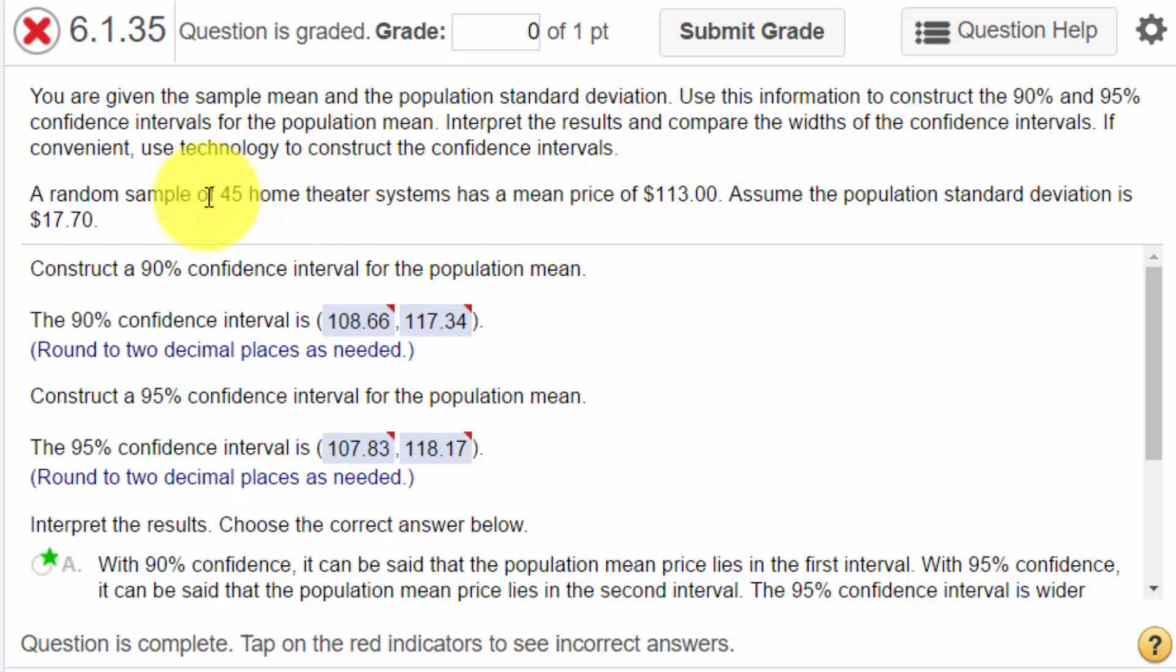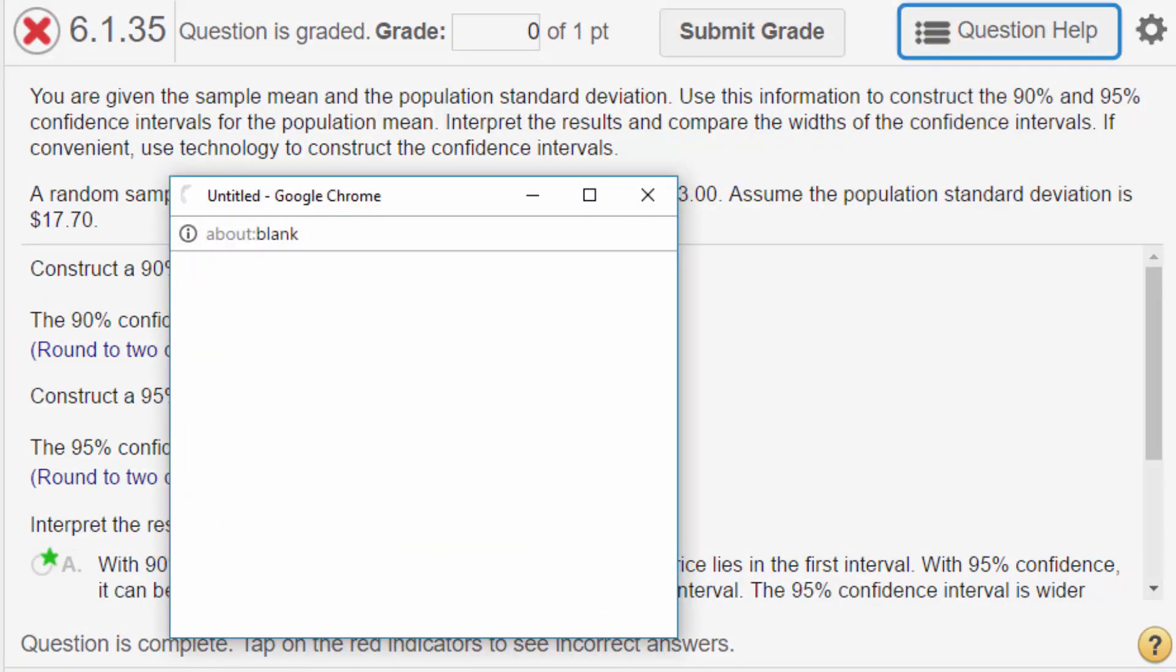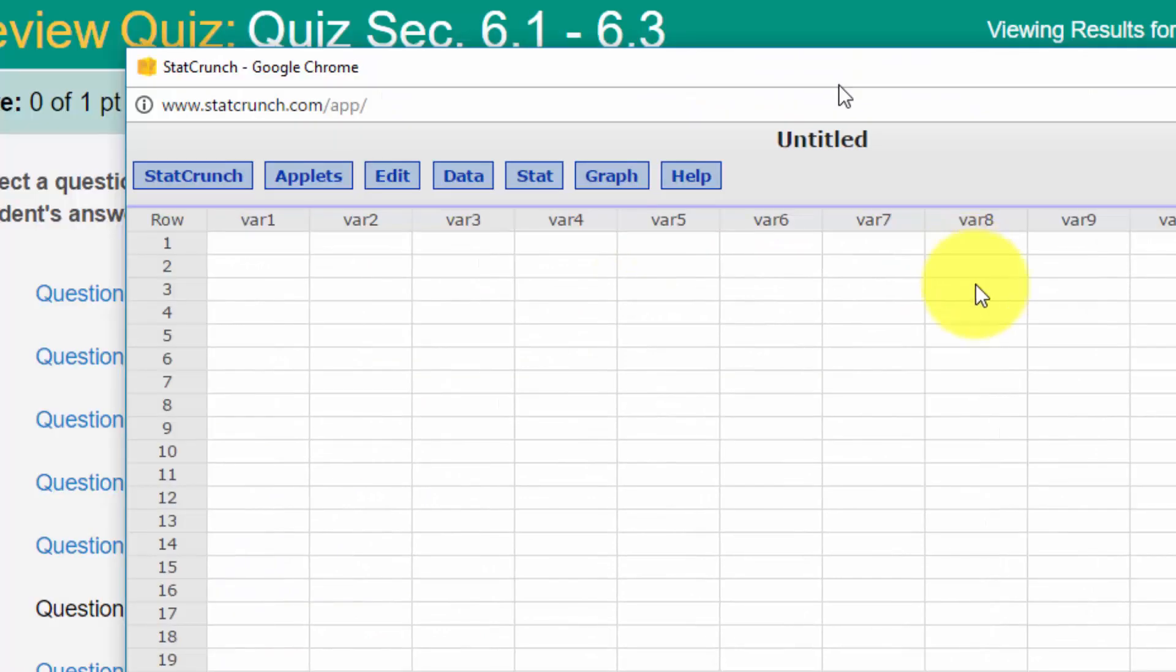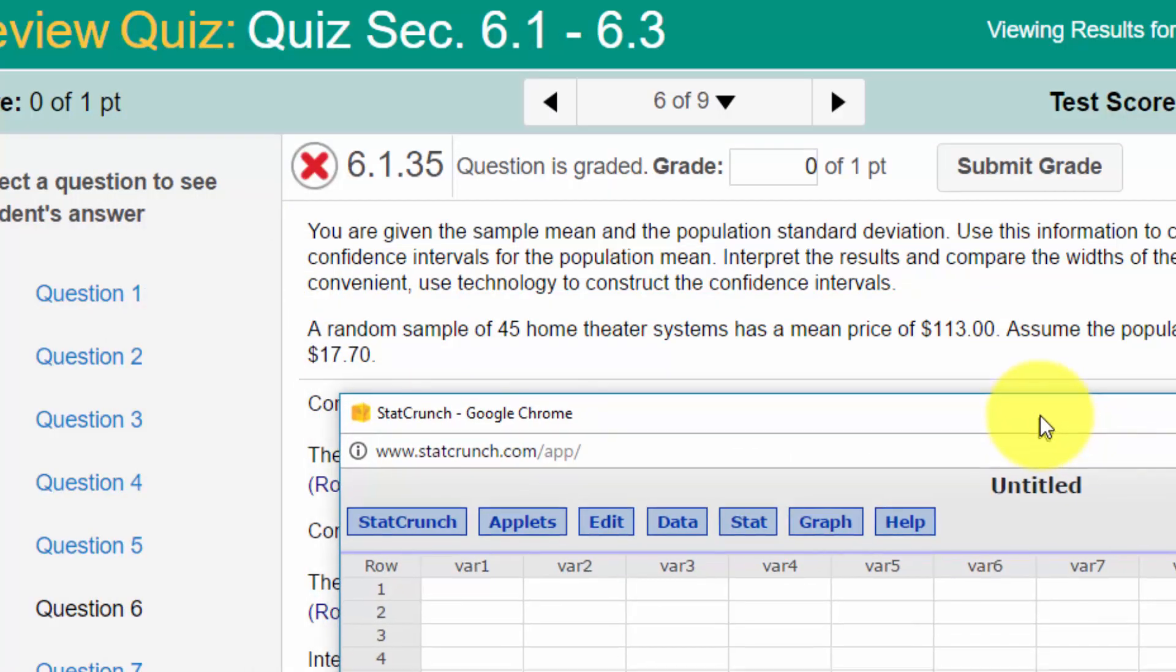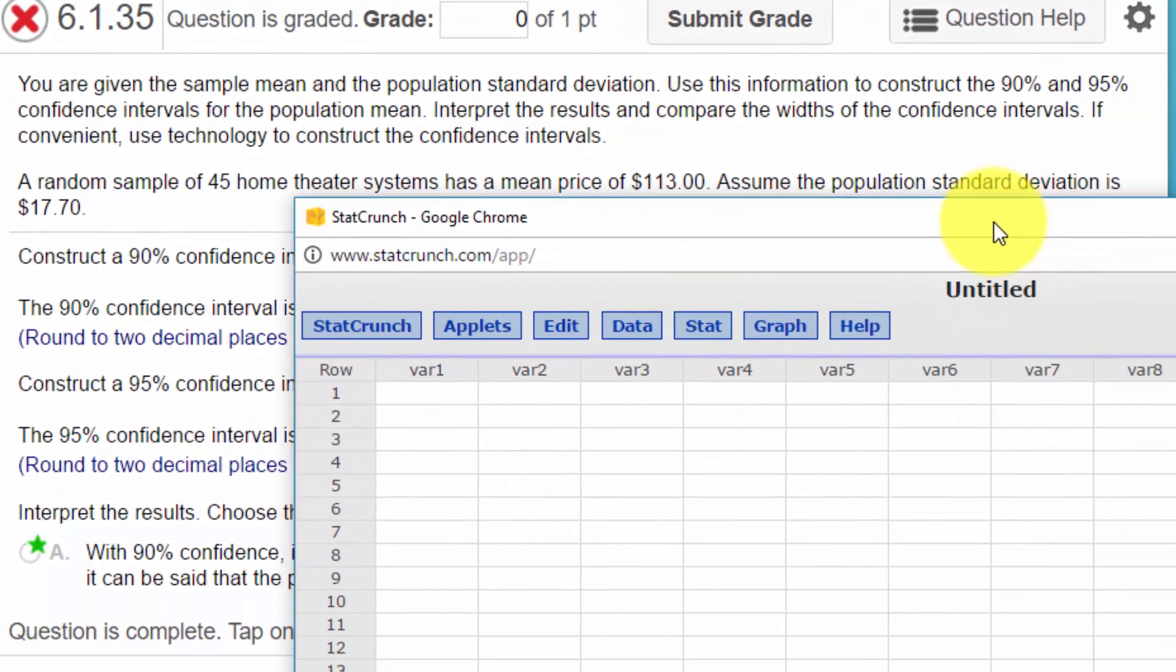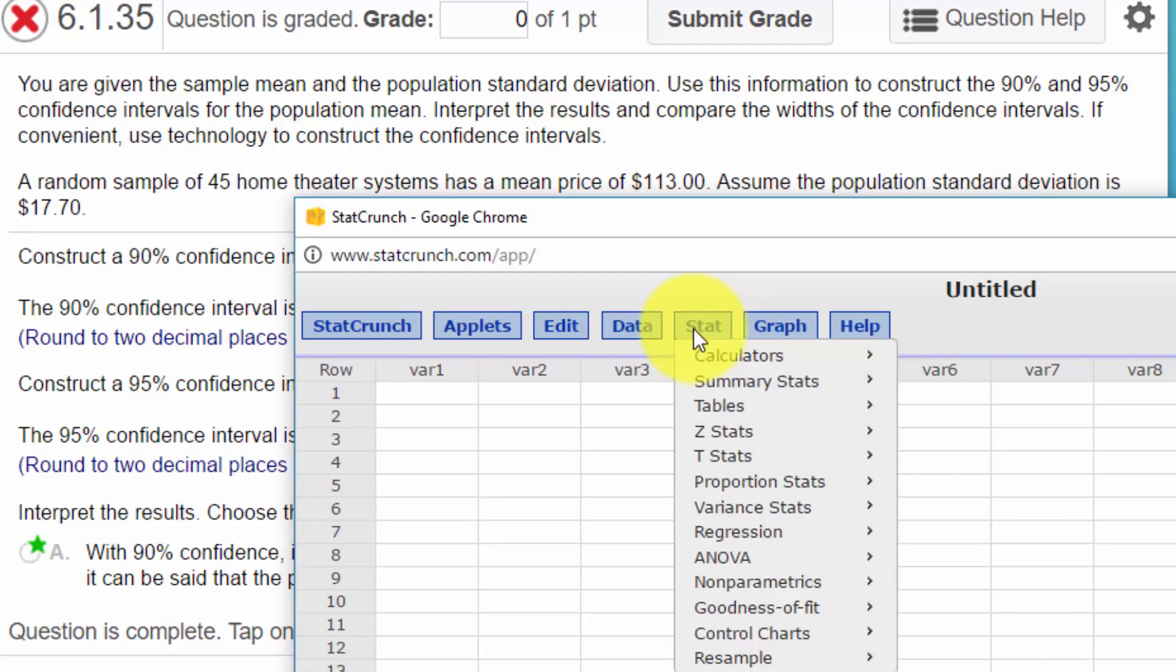We're given the sample of 45, a mean price, the sample of 113, and the population standard deviation of 1770. So let's bring up StatCrunch. We'll do it this way. Okay, I have StatCrunch up. I'm going to drag it down here so we can see what we're working on.